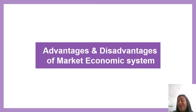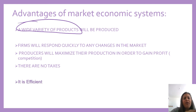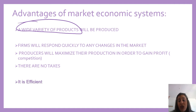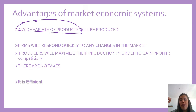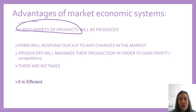Let's talk about the advantages and disadvantages of a market economic system, starting with the advantages. First, there would be a wide variety of products, because due to competition between firms, producers want to satisfy consumers — the more satisfied consumers are, the more loyal they will be to the firm. So with a high level of competition, producers will start offering a variety of goods and services. The second advantage is that firms will respond quickly to any changes in the market, moving their factors of production into the production of goods with high demand.